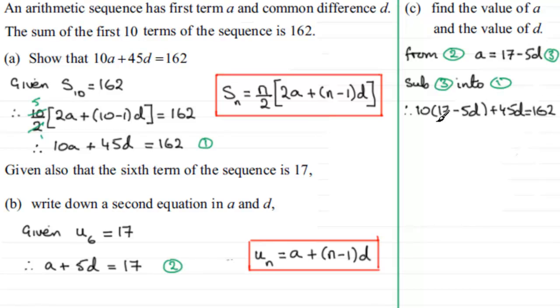So if we just expand the bracket, what do we have? 10 times 17 is 170. Then minus 50D plus the 45D. Well, that equals 162. And if we simplify this, let's just add up our 170.